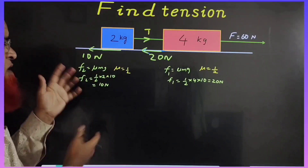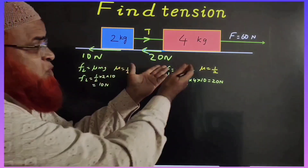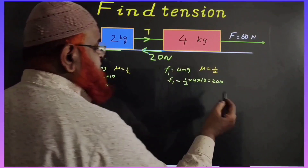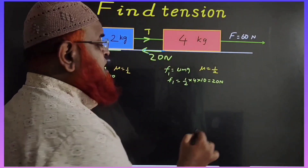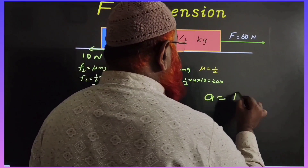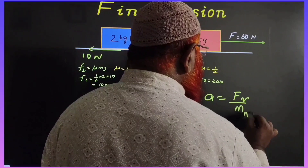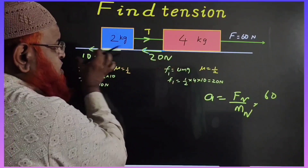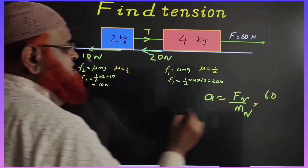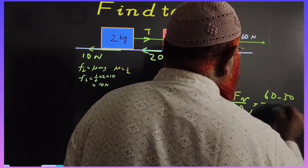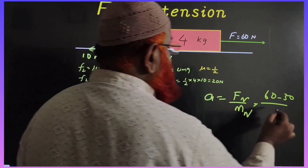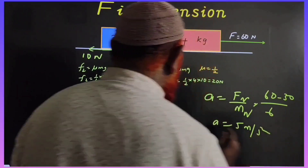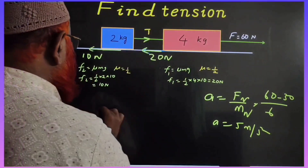Friction on this block is 10N, μMG, because μ is 1/2 here, given. First find out acceleration, which is nothing but net force by net mass. Net force is 60. Friction because of these two blocks is 20 plus 10 which is 30. So minus 30 by net mass, 4 plus 2 is 6. Acceleration is 5 m/s².